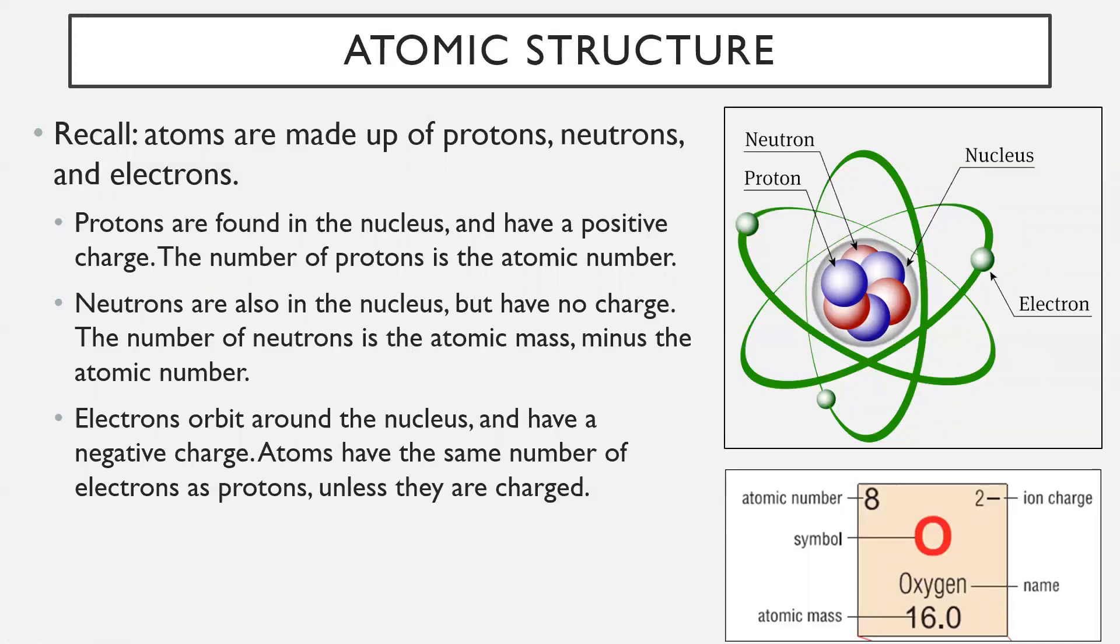So atomic structure. Atoms are made up of protons, neutrons, and electrons. Protons and neutrons are found in the nucleus of an atom. The number of protons is your atomic number. Your number of protons also dictates what kind of an element you have. Protons are what determines what an element is. Neutrons are also in the nucleus, but they have no charge. The number of neutrons is your atomic mass minus the atomic number. Electrons orbit around the nucleus, and they actually have a negative charge. Atoms have the same number of electrons as protons. However, if they're charged, they don't. A charged individual atom is actually called an ion.